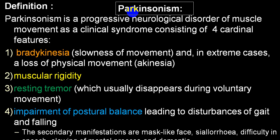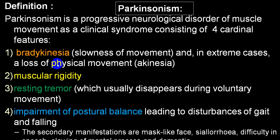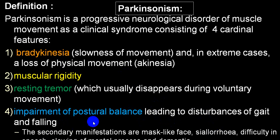Parkinson's disease is one of the conditions that will have Parkinsonism. Bradykinesia can range from slowness of movement to the extreme case of nearly absent movement, which we call akinesia. Resting tremors typically disappear during voluntary movements. Because of muscular rigidity and bradykinesia, a person will also have impairment of postural balance, disturbances in gait, and frequent falls. Along with that you can get mask-like face, sialorrhea, difficulty in speech, retarded mental processes, and even dementia.